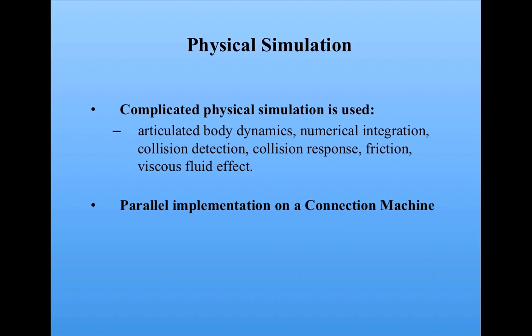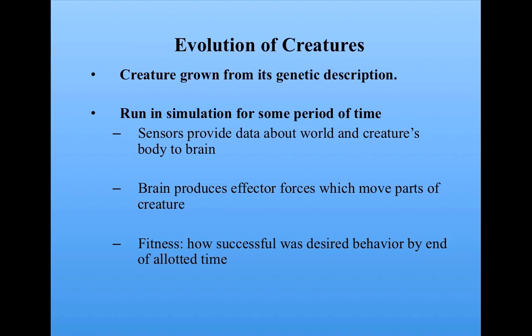As you can imagine, this whole algorithm takes a lot of computation. The creature is grown from its genetic description, and to calculate its fitness, it's run in simulation for some period of time. The sensors provide data about the world, the brain produces effector forces to move the creature, and the fitness is how successful the desired behavior was — such as swimming, hopping, following a light, or competing — by the end of the allotted time. That's my quick overview of this extremely complicated algorithm, but the results are a lot of fun to watch and very thought-provoking.